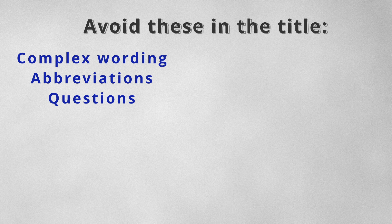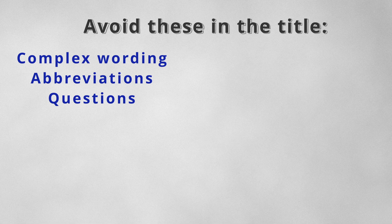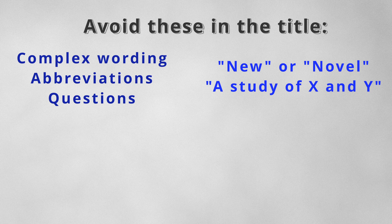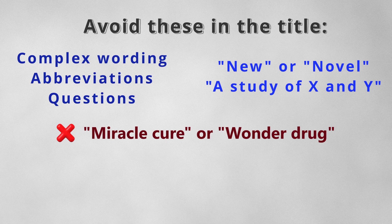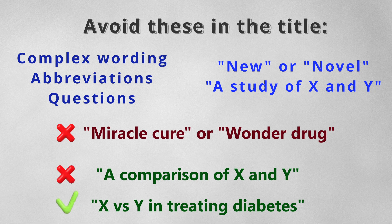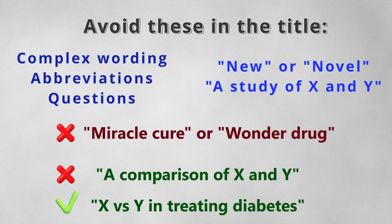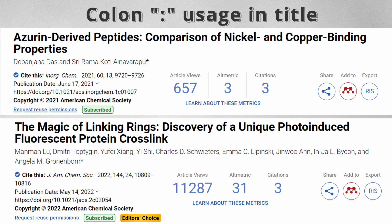Though I have seen a few papers with titles that are questions, you should generally avoid it. You should avoid writing 'new' or 'novel' in the title or abstract of the paper, and avoid writing 'a study of X and Y.' Don't write things like 'miracle cure' or 'wonder drug' that sensationalize your title. Instead of writing 'a comparison of X and Y,' a better title would be 'X vs. Y in treating diabetes.'